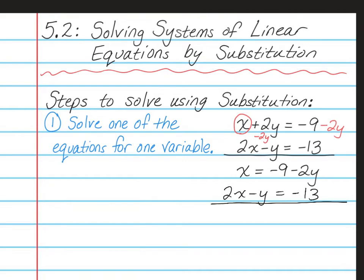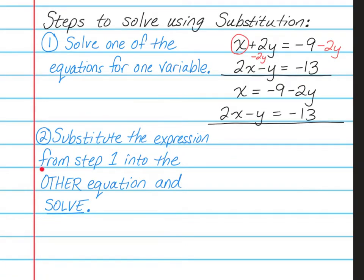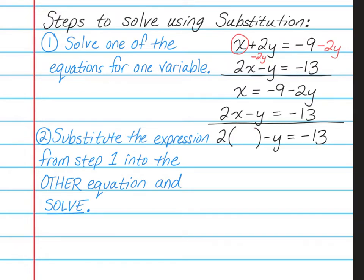Now we're ready to move on to step two. Step two is to substitute the expression that we just found from step one into the other equation, and then we're going to solve it. That'll give us half of the answer that we need. Since we solved for x, we're going to take this piece and substitute it into the x. I'm going to rewrite that second equation, but instead of x, I'm going to write parentheses. So we have 2 times parentheses minus y equals negative 13, which is exactly the same equation except we have parentheses instead of x. We're going to take this piece and put it into that x, so I'm going to write negative 9 minus 2y.